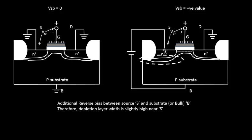There are other effects that will also happen, but the two primary observations are: first, there is an additional reverse bias present in this PN junction diode; and second, because of this additional reverse bias we see an increase in the depletion layer width. These are the two primary observations we see just as we connect a potential VSB as some positive value between the source and the body.